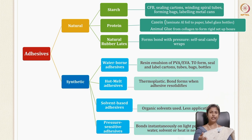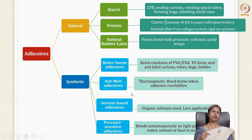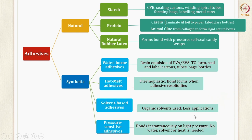Synthetic adhesives include waterborne adhesives, hot melt adhesives, solvent-based adhesives, and pressure-sensitive adhesives. Waterborne adhesives are resin emulsions, generally of PVA or EVA, used to form, seal, and label cartons, tubes, and bags. Hot melt adhesives are thermoplastics that can be melted and reformed; the bond forms when the adhesive re-solidifies. Solvent-based adhesives use organic solvents but have less application in the food industry. Pressure-sensitive adhesives form bonds instantaneously with light pressure, requiring no solvent, water, or heat.